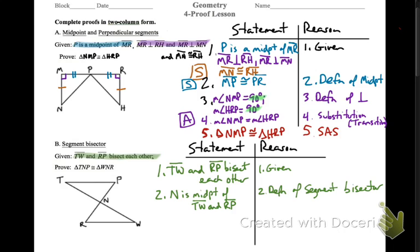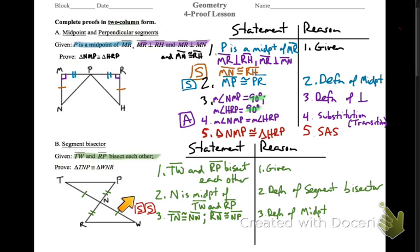Now, just like above, what does it mean to have a midpoint? That means we have congruent segments. If we have congruent segments, we better mark them. We have two sides of our two triangles, and the reason for that is the definition of a midpoint. Now we've got two pieces of the puzzle — we need one more. Nothing else was given, so what does the diagram give us?